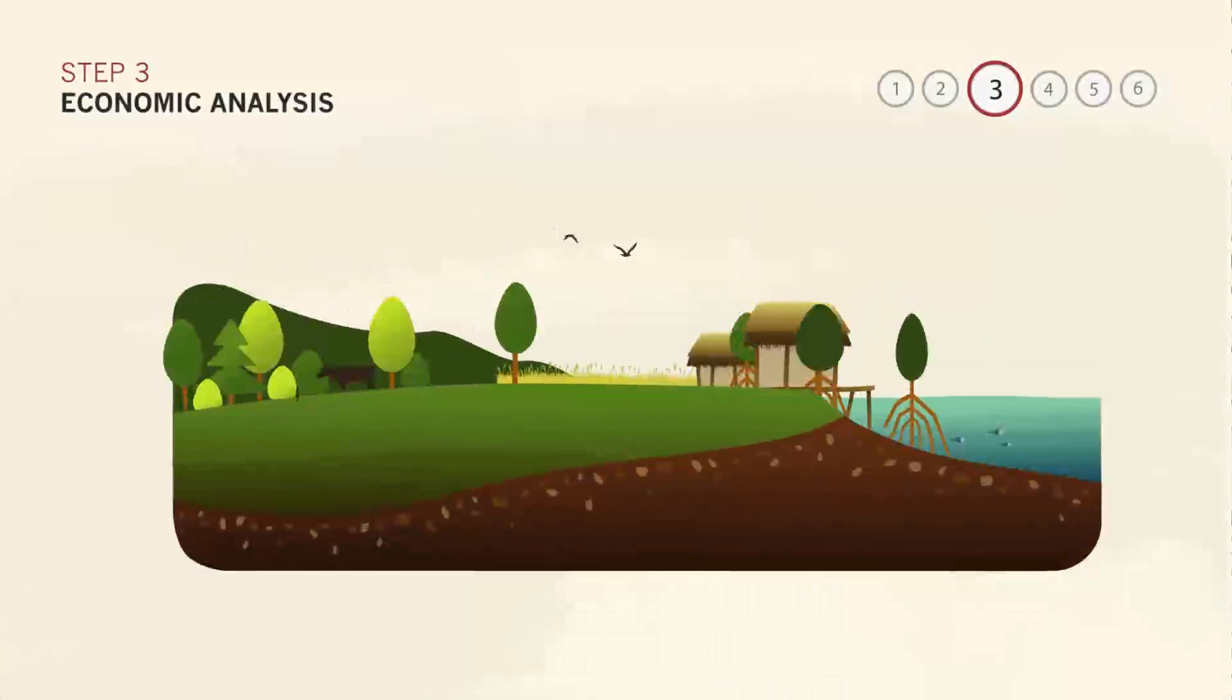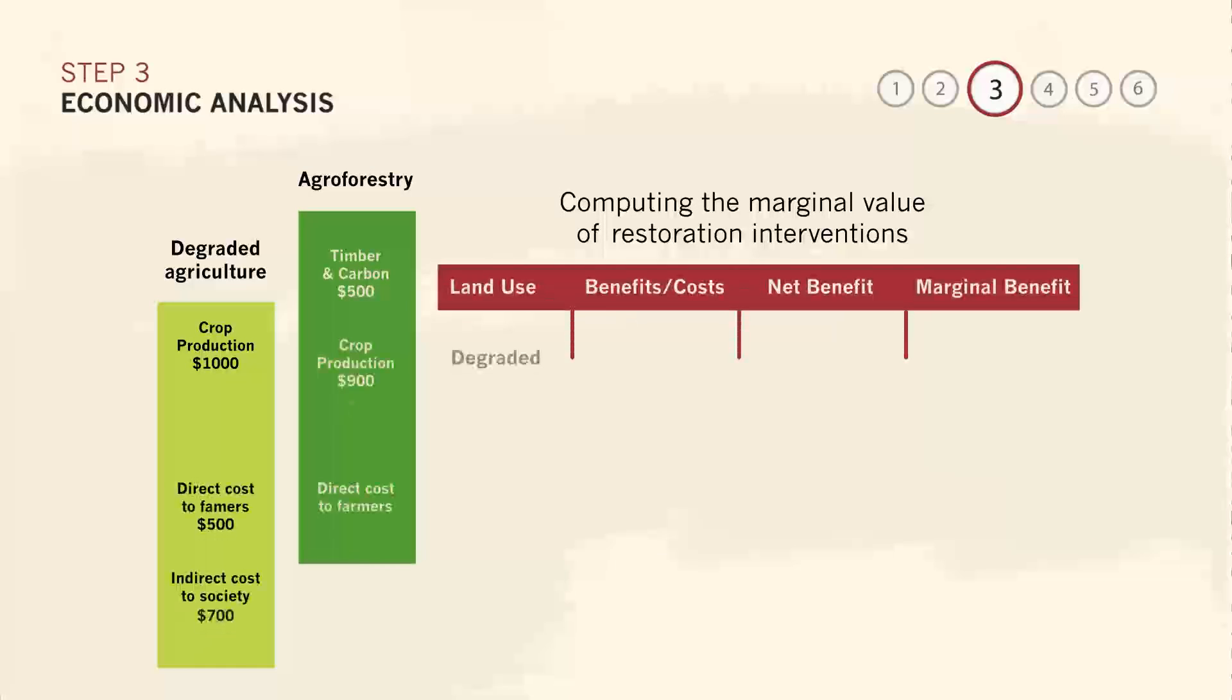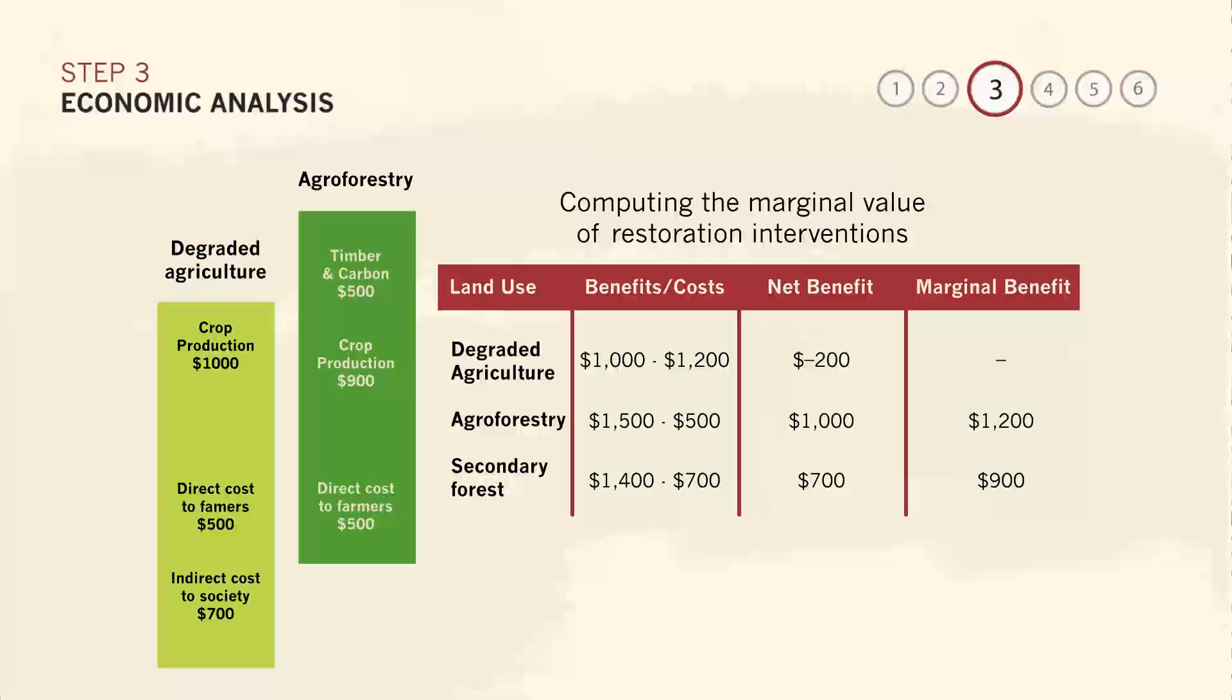When monetizing natural benefits, remember that the goal is to capture a broad range of values that are important to society, not just those that have value in formal markets. Spiritual and cultural use of land has a value, for example, and should be included in some analyses. Let's see what the cost-benefit calculation looks like for a sample hectare of degraded agricultural land in Rwanda. Under business as usual, crop production earns the landowner $1,000 a year, but it costs the owner $500 to produce the crop and it costs society $700 a year in soil depletion.